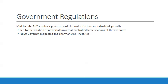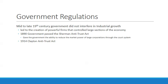In 1890, the government passed the Sherman Antitrust Act, which began to break down trusts — where a central board of directors held controlling interest over a large, diverse number of companies. This gave the government the ability to reduce the market power of large corporations through the court system and actually break up monopolies. Then in 1914, the Clayton Antitrust Act was passed, banning anti-competitive practices and strengthening the Sherman Antitrust Act. Together, these dismantled monopolies and created more competitive markets.